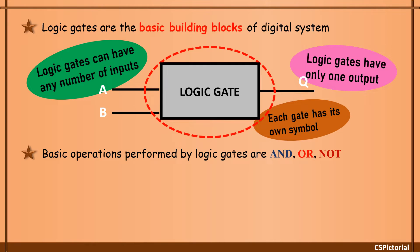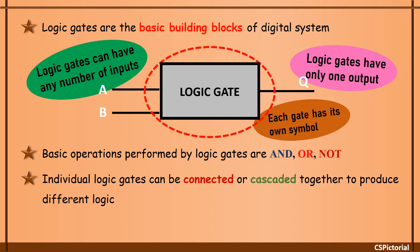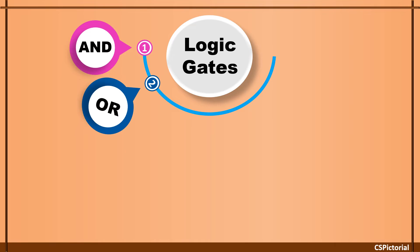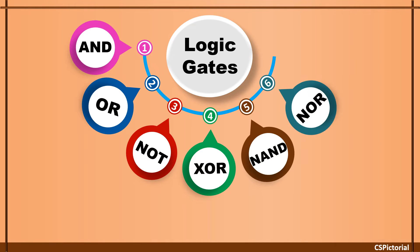Basic Boolean operations performed by logic gates are AND, OR, NOT. The logic gates can also be connected together to produce a different logic function. Truth table is associated with each logic gate. There are 7 different logic gates: AND, OR, NOT, XOR, NAND, NOR, XNOR.